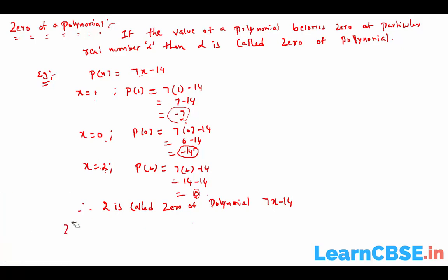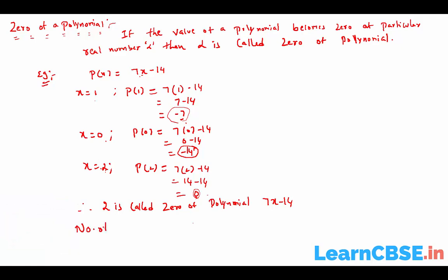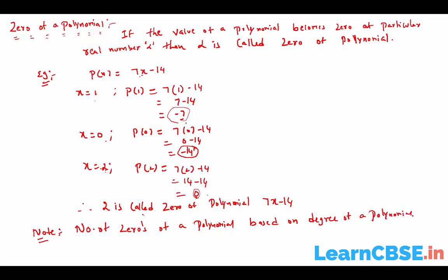Note: Number of zeros of a polynomial depends on the degree of the polynomial. That means number of zeros equals degree of the polynomial. If the polynomial has degree one, the number of zeros is one. If the polynomial has degree three, the number of zeros is three.